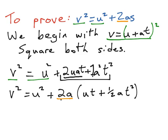The only remaining part is to realize that we are missing the letter s, but in essence we're not really because ut plus a half at squared from our second proof is just what your displacement is.